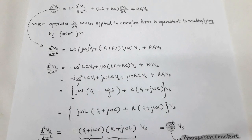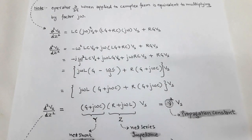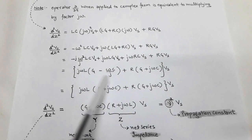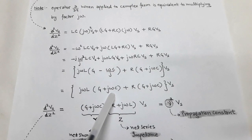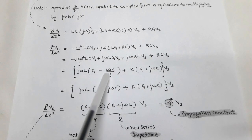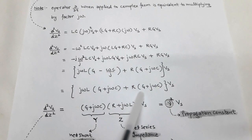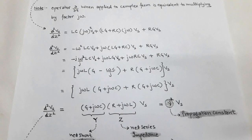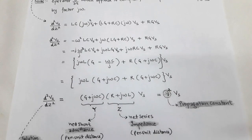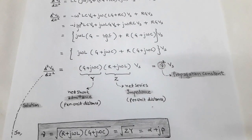In the first term we have (G − ωC/j), so we take j to the numerator side and the sign becomes positive. From these two terms we again have a common factor (G + jωC). After taking the common factor, we get: d²V_s/dz² = (G + jωC)(R + jωL)·V_s.